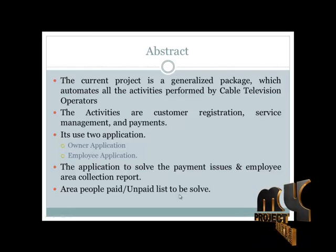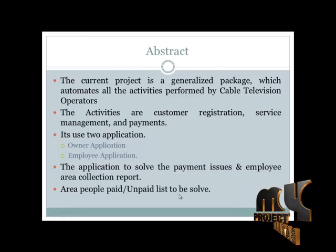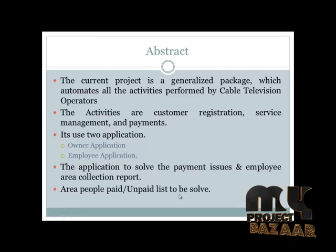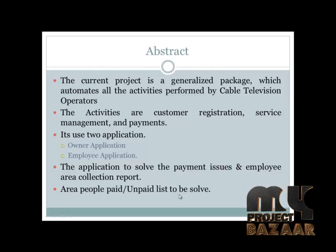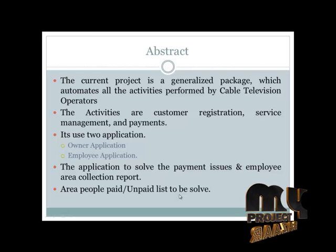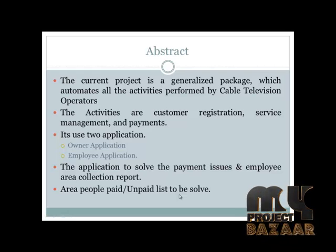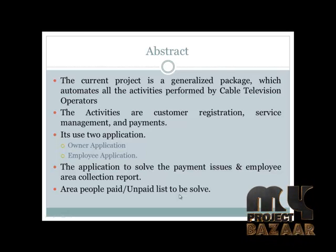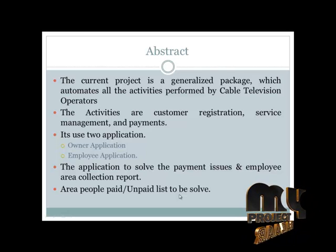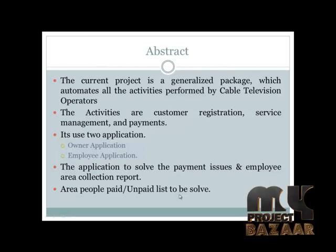The online services are used by the cable operator for the government business. The online gateway uses the IP number to forward payment for immediate purchase. This application includes two separate applications: one for the owner side and one for the employee side.